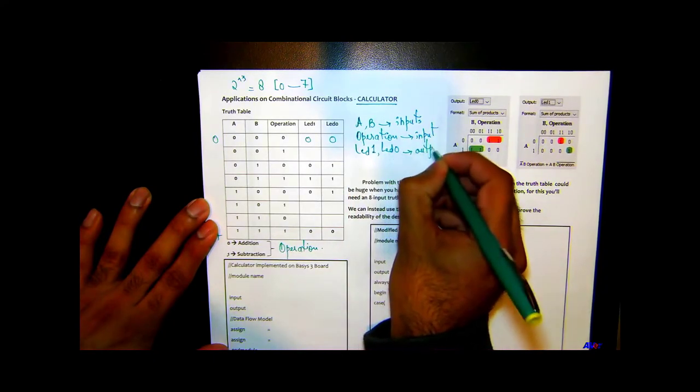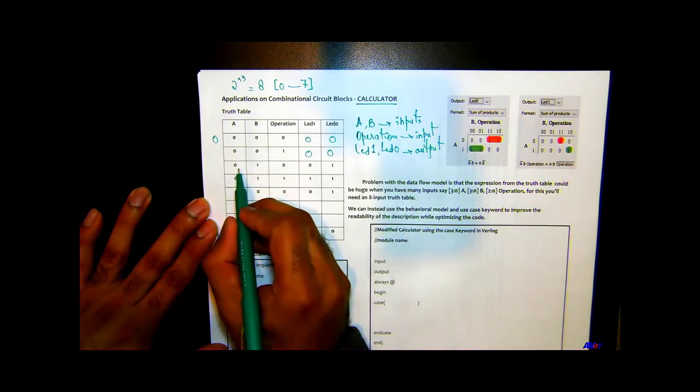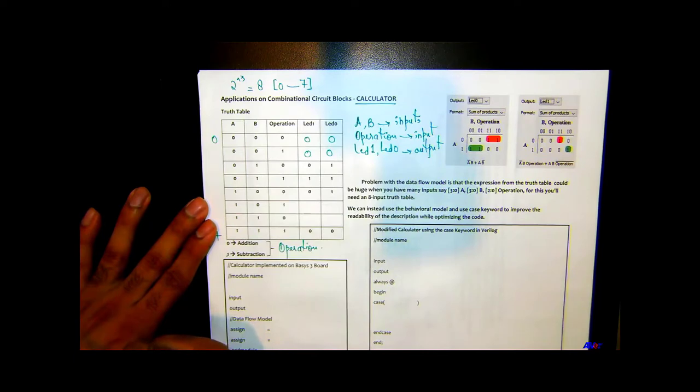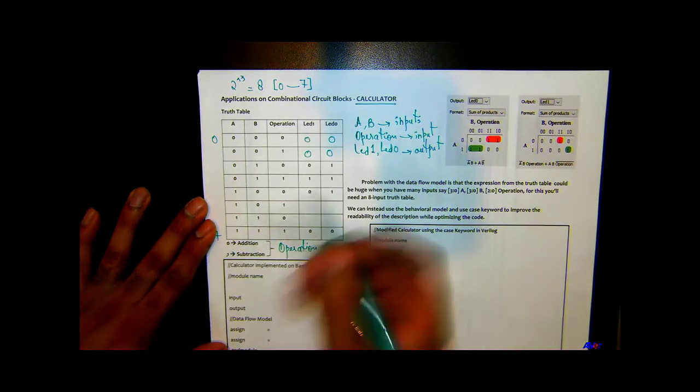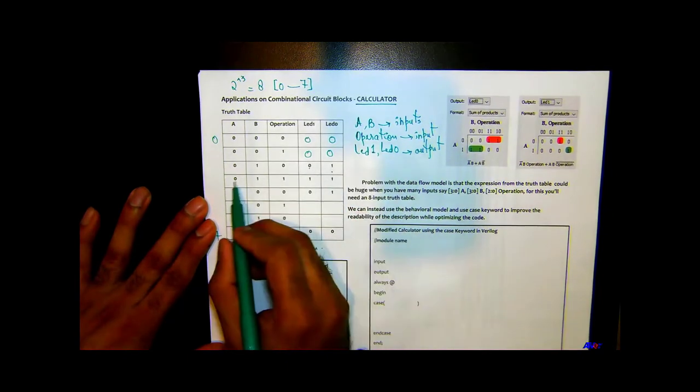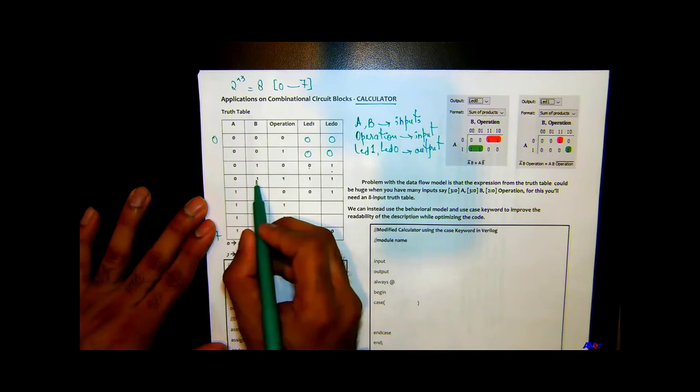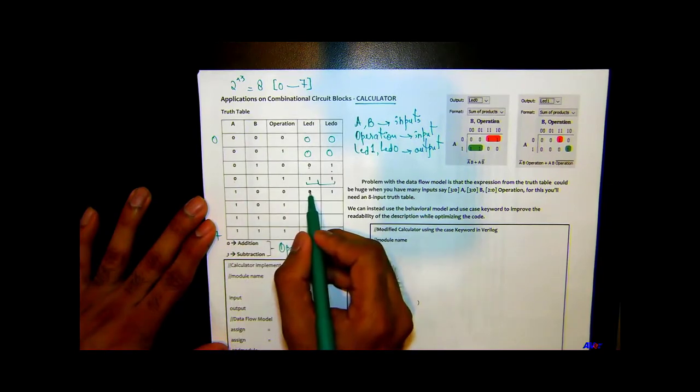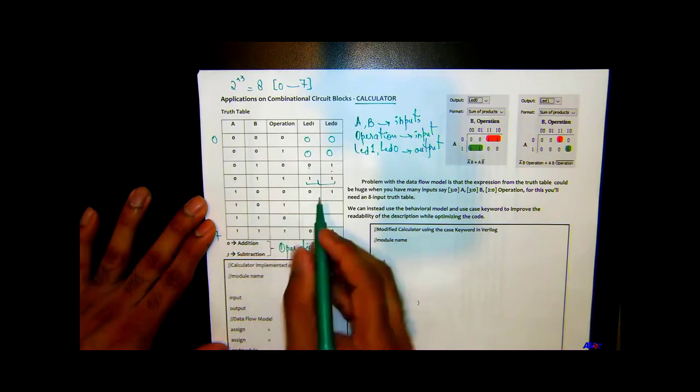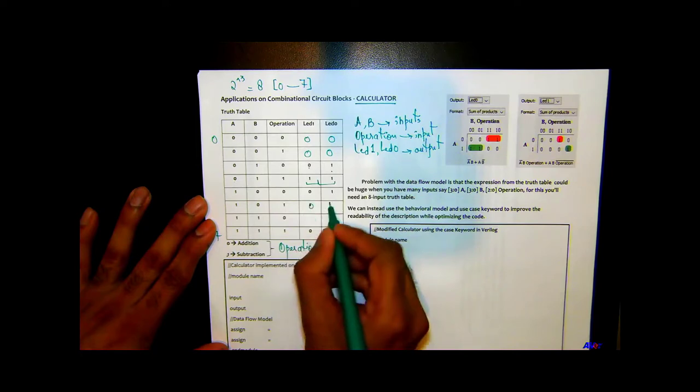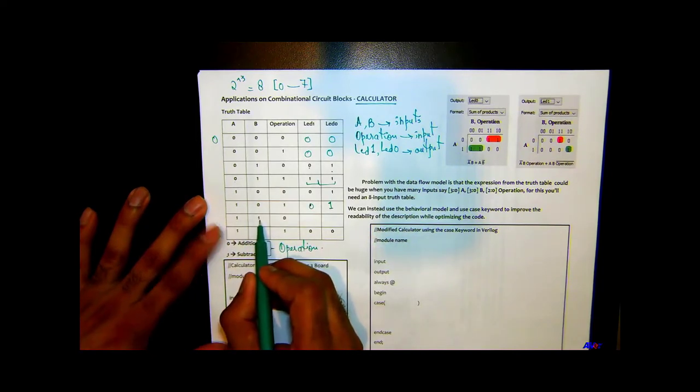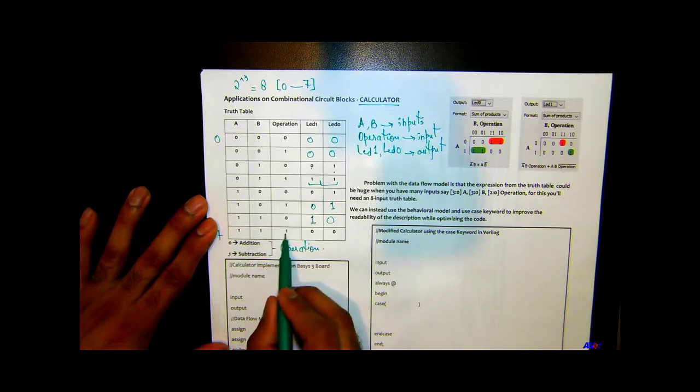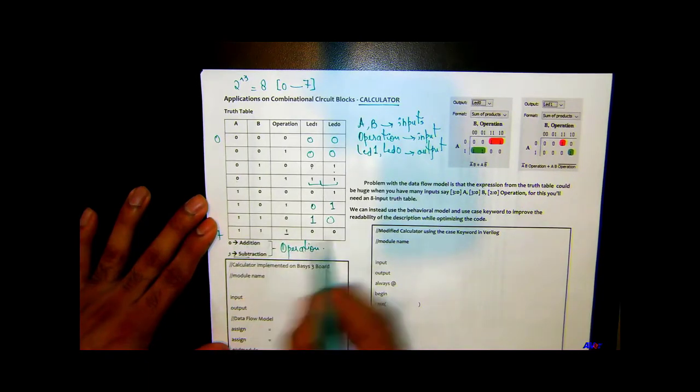Zero minus zero is going to be zero. Zero plus one is one, where's the binary code for one? Zero one. Here we are subtracting it because operation is one, zero minus one - I just went ahead and took the two's complement of it and it's one one. One plus zero is one, so binary code for one is zero one. One minus zero is one, so binary code of one is zero one. One plus one where operation is zero which is add, so one plus one is going to be two, and the binary code for two is one zero. Similarly this is one operation so we are going to do subtraction, so one minus one is zero, so you get zero zero.